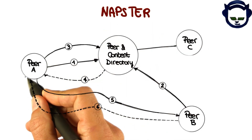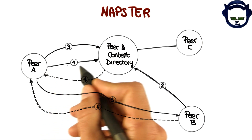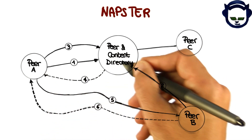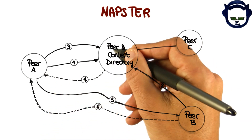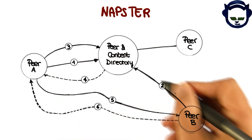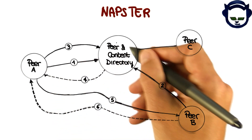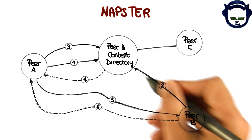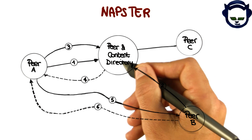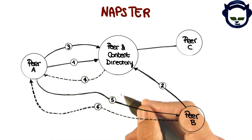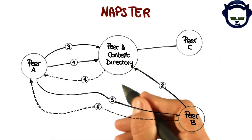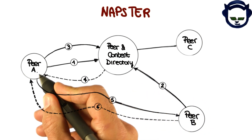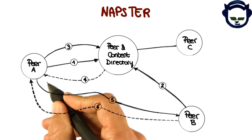Let's look at a typical sequence of events for the Napster system. Peer A will start by registering with the content directory. Peer B will also register with the content directory. When these two peers register, the content directory will know what kind of content they can provide. Later on, peer A will request a song. And one first observation, based on this interaction, is the fact that up to now, this is a purely client-server system.